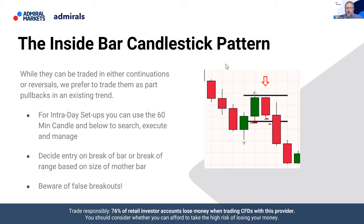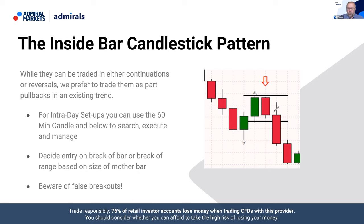As a general rule, I'd say two to three pips beneath the low of the mother bar for a short, and two pips plus the spread for a long trade. Beware of false breakouts — we saw that on the pound reversal where price had been up, put in a bearish inside bar, tried to push up again, faked out, and rolled over. When you're in a pullback in a trend, you know the direction you're looking to trade — it's just making sure you're in a position to catch that run.